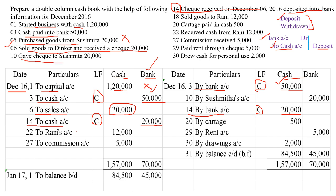Moving on: gave check to Sushmita. We are giving a check to Sushmita. When we are making a payment, it should be credited — so by Sushmita's account. And we are writing the amount in the bank column because we are not giving cash, we are giving a check. So in the cash column, you will not write anything. In the bank column, you have to record 20,000 rupees.